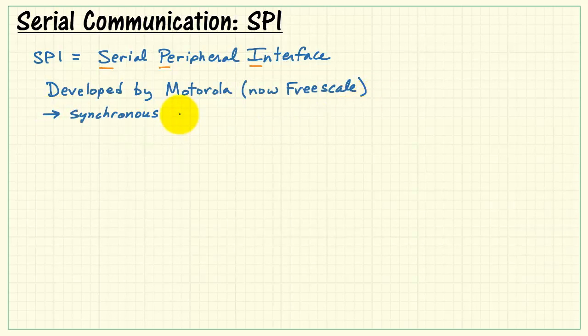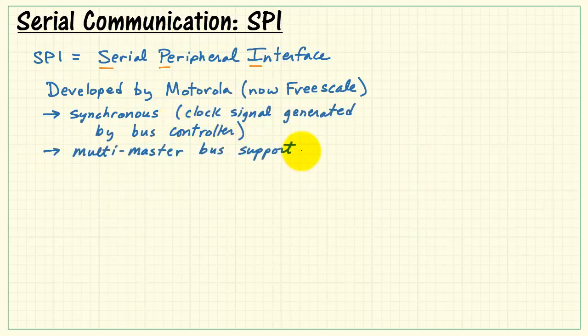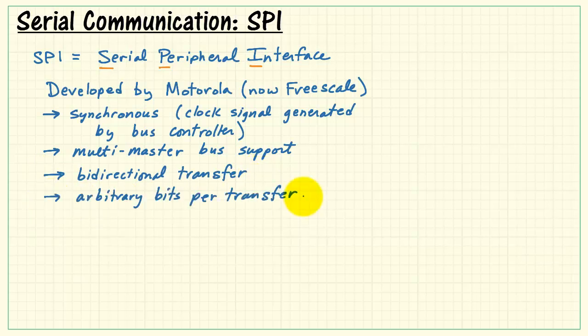SPI is a synchronous data transfer technique. That means that we have a dedicated clock signal which is generated by the bus controller. SPI supports multiple master devices, and it also supports fully bidirectional data transfer. You can have an arbitrary number of bits per transfer, although it's most common that you will have 8 bits per transfer.